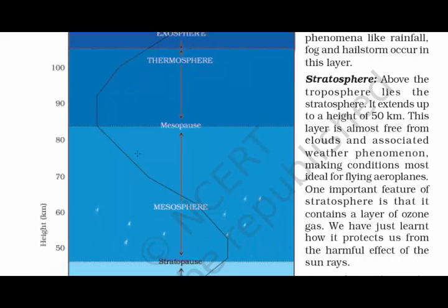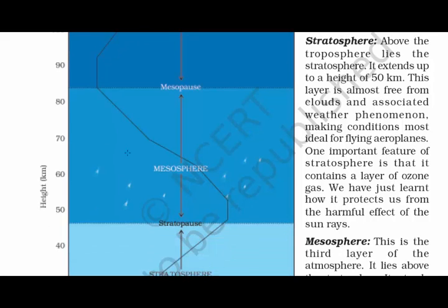Stratosphere: the height of the stratosphere is 50 km from the ground. In this layer, aeroplanes fly. It also contains the layer of ozone gas, which protects us from the harmful effects of the sun's rays.